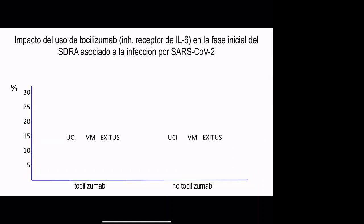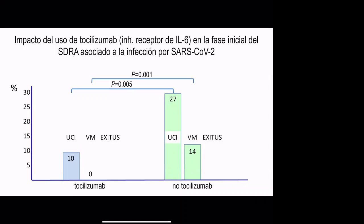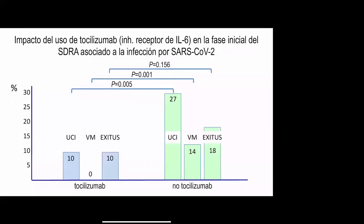The results of our study showed that patients receiving tocilizumab required significantly lower ICU admission, required less mechanical ventilation, and there was a trend towards lower mortality — 10% versus 18% in non-tocilizumab recipients. According to our results, early blockade of interleukin-6 apparently is able to stop the progression of patients towards development of severe respiratory distress syndrome.